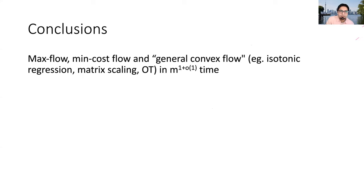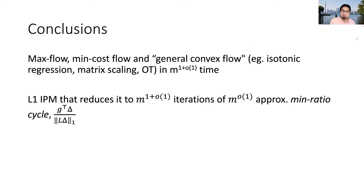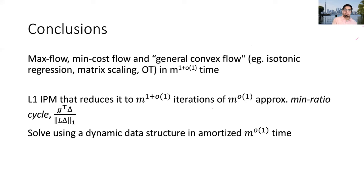In conclusion, we give an algorithm to solve maximum flow, min-cost flow, and general convex flows in almost linear time. Our algorithm has two essential ingredients: first, an L1 IPM that reduces the problem to an almost linear number of min ratio cycle sub-problems that only need to be solved approximately; and second, a dynamic data structure that solves each of these problems in small amortized time, giving an almost linear time algorithm for the entire problem. Thank you.